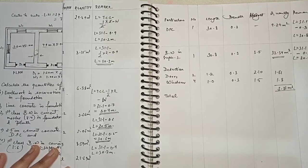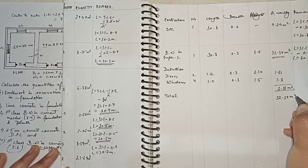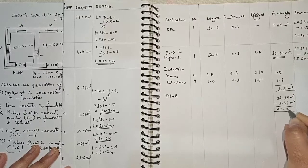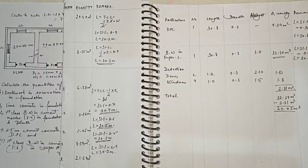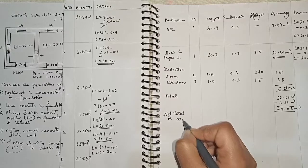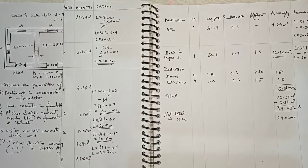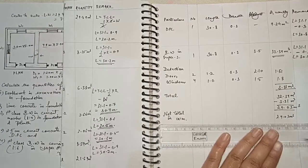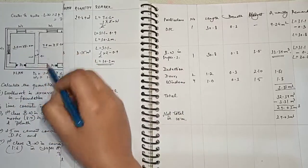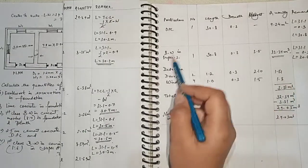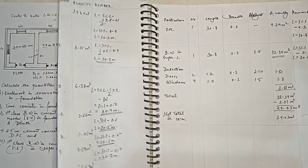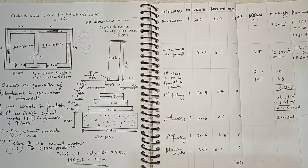So the superstructure quantity is 32.34 cubic meters minus deduction of 3.31 cubic meters, giving a net total of 29.03 cubic meters. This is the net total quantity for brick work in superstructure. I hope you understand how to estimate quantities for a two-roomed building.